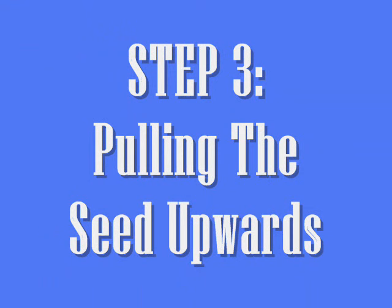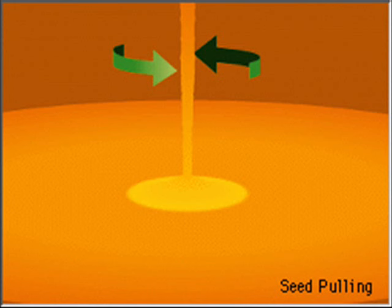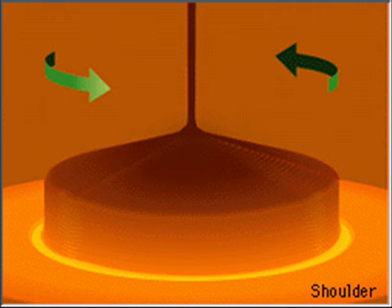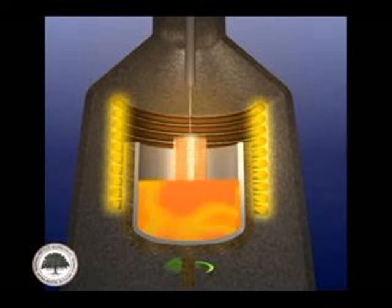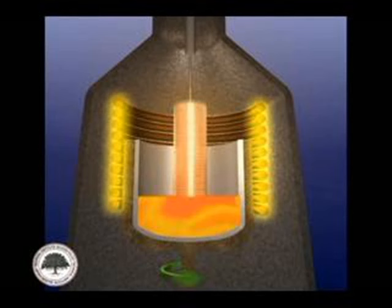Step 3: Pulling the seed upwards. The seed crystal is extracted from the molten silicon pool and the rod is pulled upward while being rotated at the same time. The rod and the crucible rotate in opposite directions to minimize the effects of convection in the melt. In manufacturing single crystal silicon, the temperature gradient, pulling rate, and rotation speed all influence the size of the resulting single crystal.